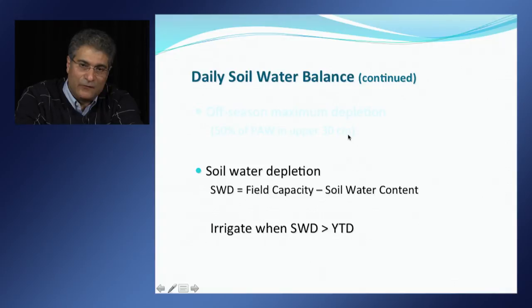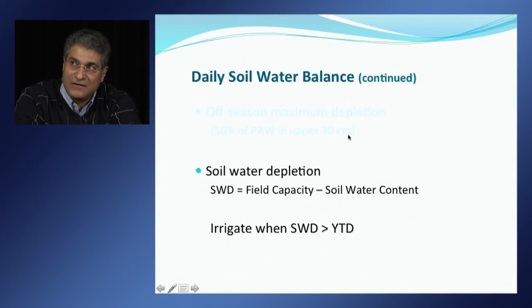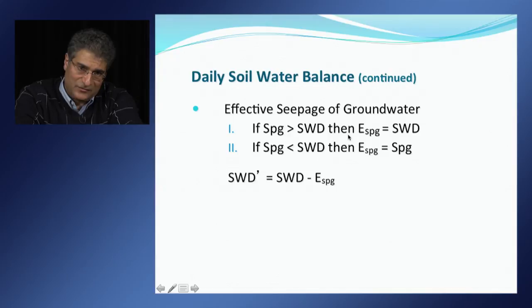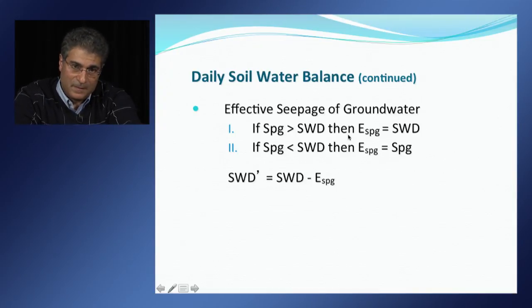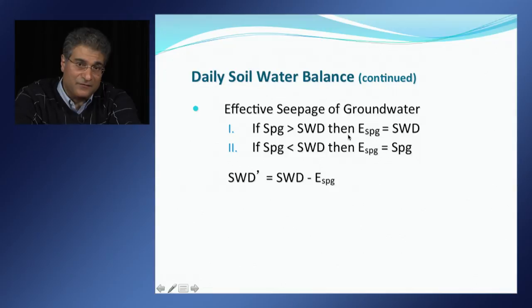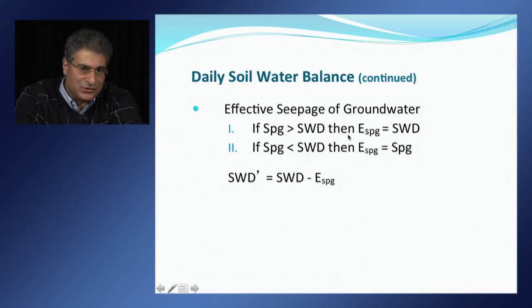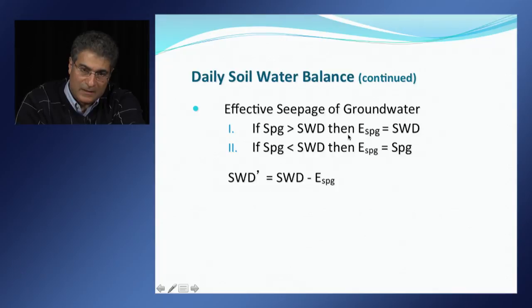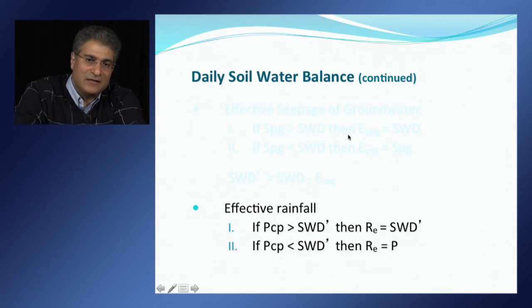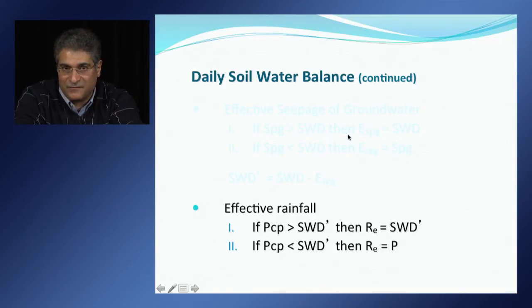Comparing soil water depletion with yield threshold depletion helps determine when and how much to irrigate. Irrigation events are given when soil water depletion exceeds yield threshold depletion. COPPLUS estimates effective seepage of groundwater and effective rainfall based on soil water depletion and seepage and rainfall amounts. If seepage is greater than soil water depletion, effective seepage equals soil water depletion; if less, effective seepage equals seepage. The soil water depletion adjusted for seepage is determined by soil water depletion minus effective seepage. Effective rainfall is estimated in the same manner as effective seepage.